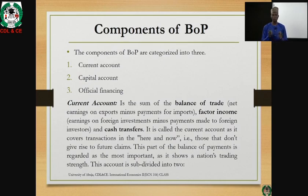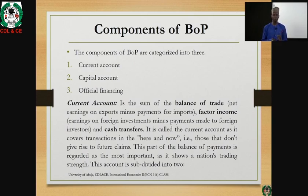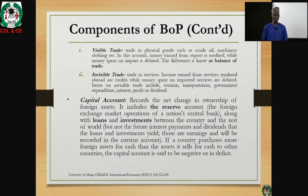The current account consists of these three components: balance of trade, factor income, and cash transfer. This component of balance of payment — the current account — is regarded as the most important because it shows a nation's trading strength. The current account is also subdivided into two: visible trade and invisible trade.